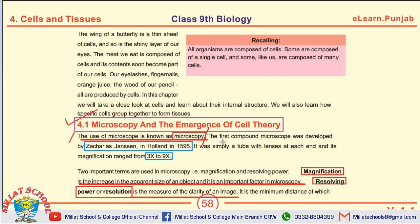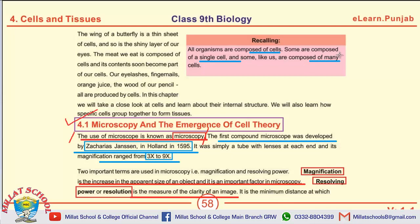There are some MCQs. The first MCQ can be: the first compound microscope was developed by Johnson in Holland in 1595, and its magnification range was 3x to 9x. All organisms are composed of cells. There are two types of organisms: one composed of a single cell, and the other of many cells.